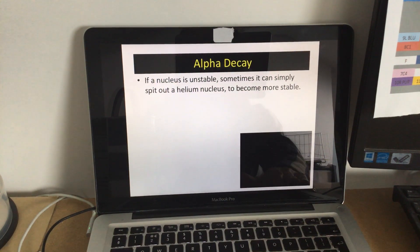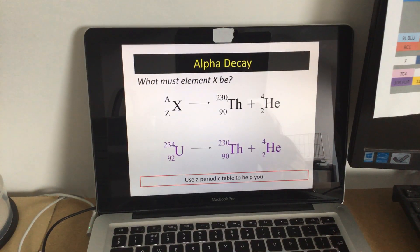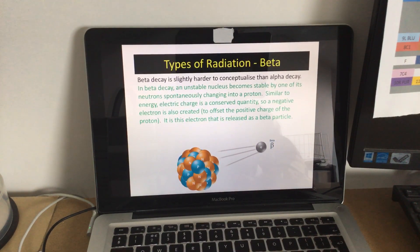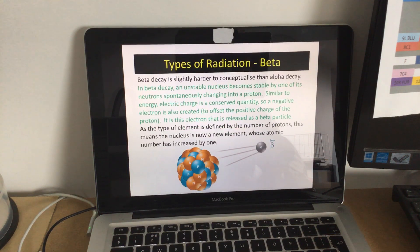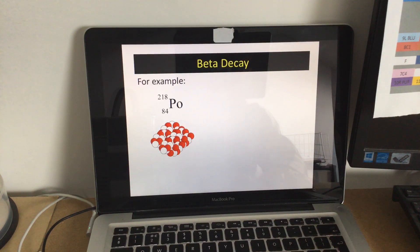Okay, if we go to beta radiation. So beta is an electron that comes from the nucleus, not from the shells on the outside. If we look here, this is polonium, 218 84. What happens with beta decay is a little bit more odd.